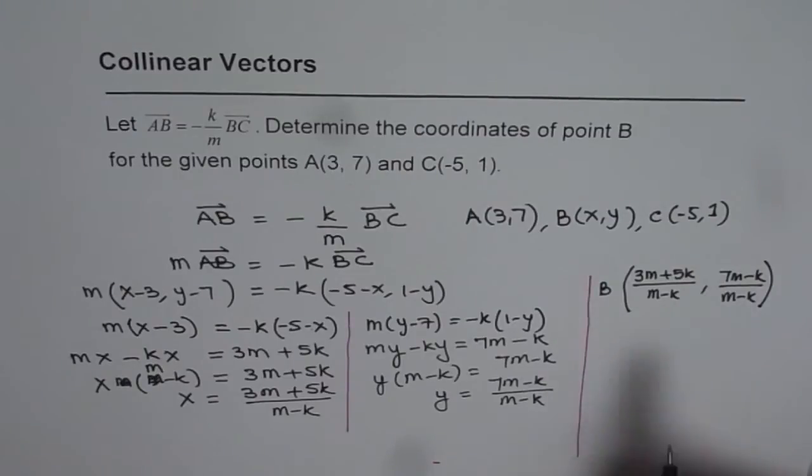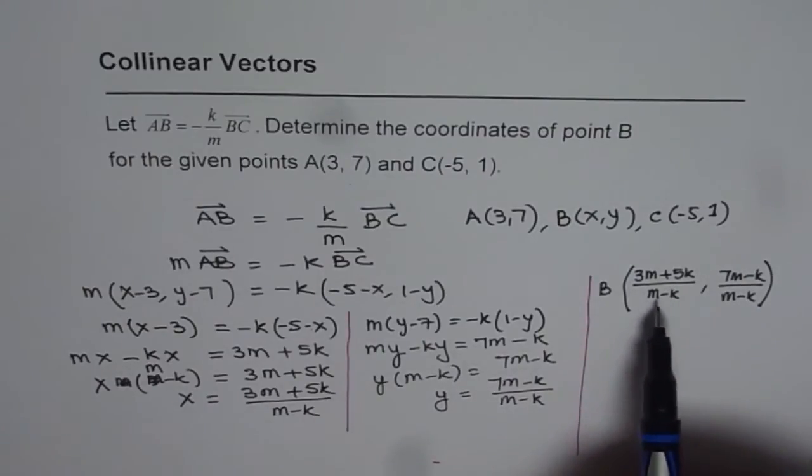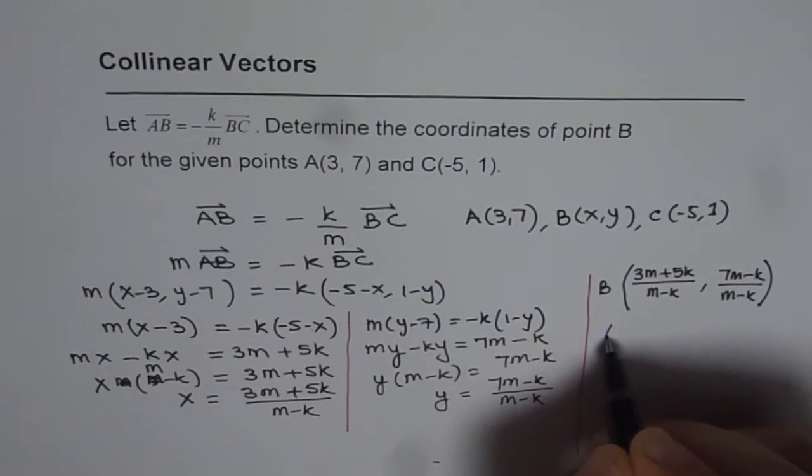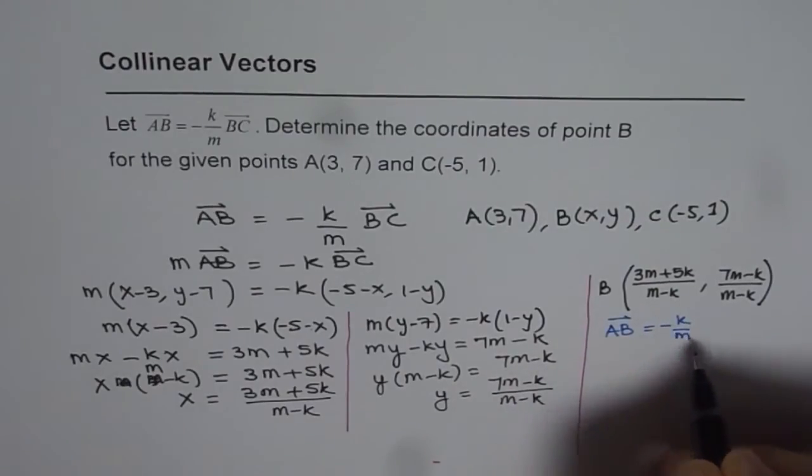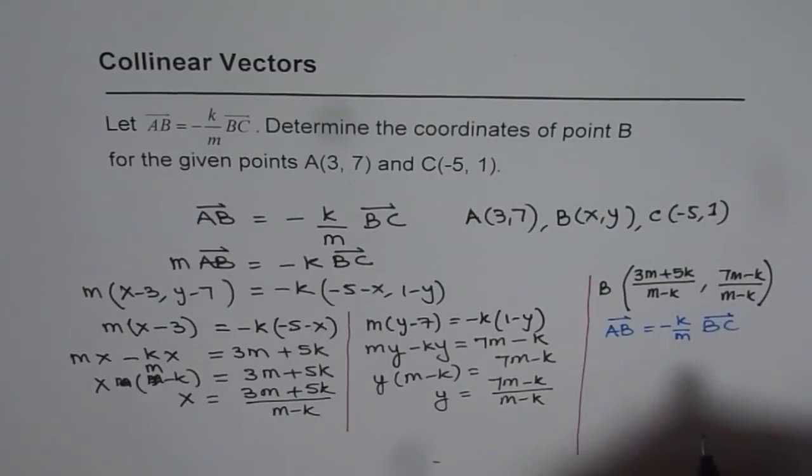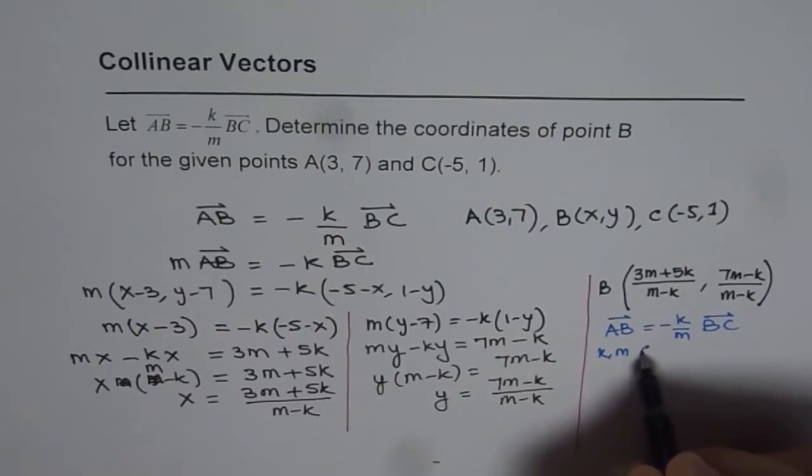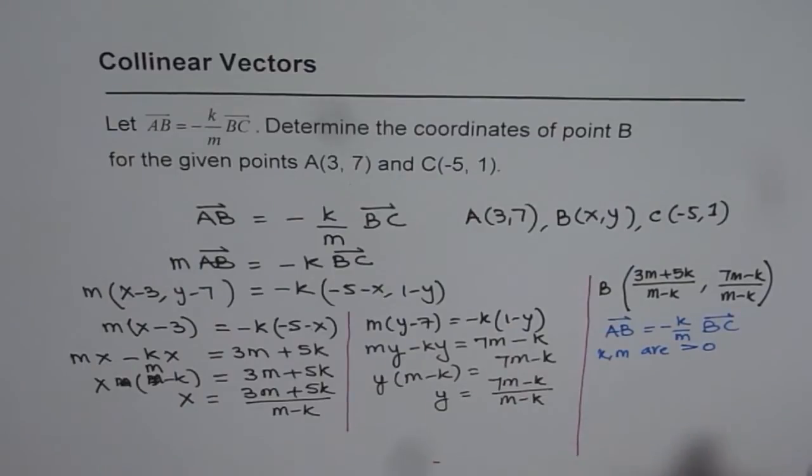Now let us understand a geometric implication of this. When we say AB equals minus K over M times BC, let us assume that K and M are positive integers, non-negative. In that case we are assuming them to be positive.